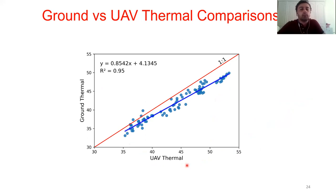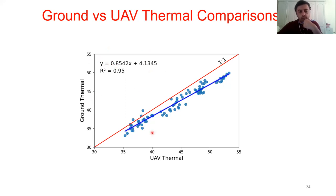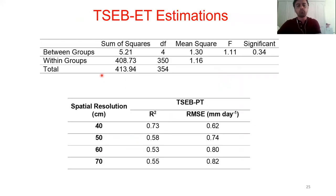These LAI maps were used as input in the T-STEP model. For the thermal data, UAV thermal measurements were compared with ground surface temperatures measured simultaneously during UAV flights. The ground thermal device was pre-calibrated, so the ground thermal data is considered reliable. Generally the data are very compatible, but UAV thermal measurements are slightly higher than ground thermal data. A regression equation was applied to calibrate the UAV thermal image, and the calibrated image was used in the T-STEP model. The root mean square error is approximately 1°C, consistent with the MicaSense Altum camera accuracy specifications.